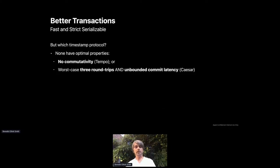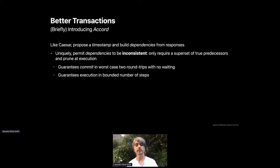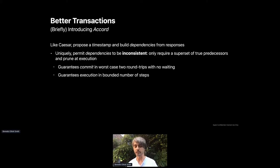That's step one. Step two is choosing the timestamp protocol. Neither Caesar nor Tempo has ideal properties in isolation, so we are also introducing Accord — a new protocol we have developed and published in a white paper. Accord achieves the best characteristics of both: it guarantees the same latency characteristics as Tempo but still maintains the dependencies that Caesar assembles, and as a result is able to perform commutative dependency resolution. This is achieved through a different way of defining the dependency set and a different mechanism of recovery. If you're interested, come seek me out — we may be organizing an extended Q&A next week, and you can also look at the white paper.